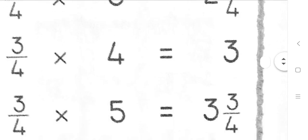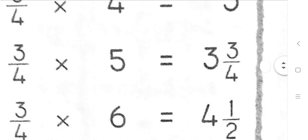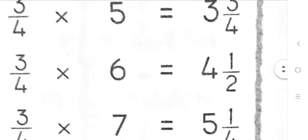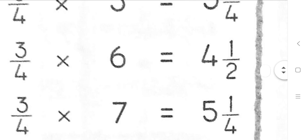3 quarters 5s are 3 and 3 quarters. 3 quarters 6s are 4 and a half. 3 quarters 7s are 5 and a quarter.